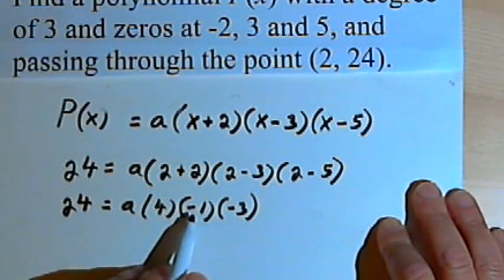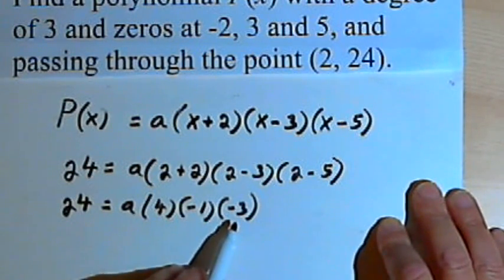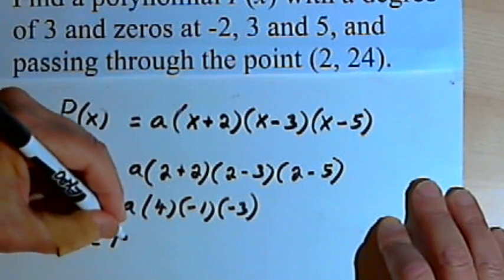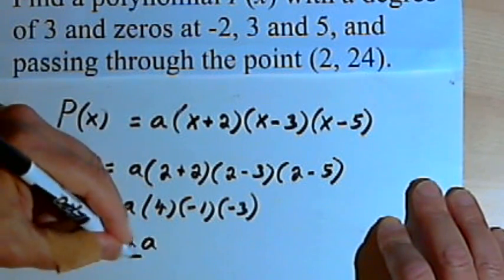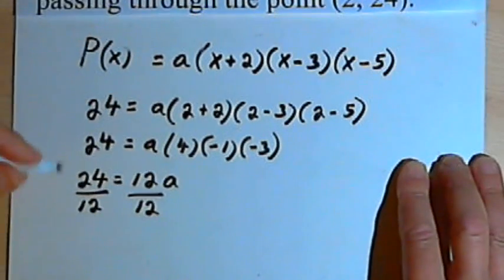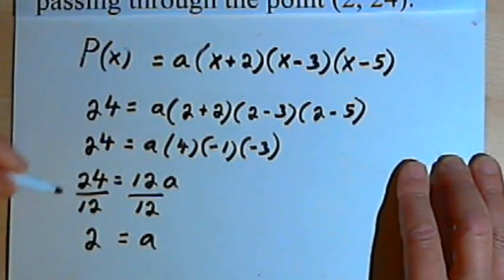Let's multiply those. 4 times negative 1 is negative 4, times negative 3 is positive 12. So I'm going to have 24 equals 12a. I multiply both sides by 12, and I find out that a is equal to 2.